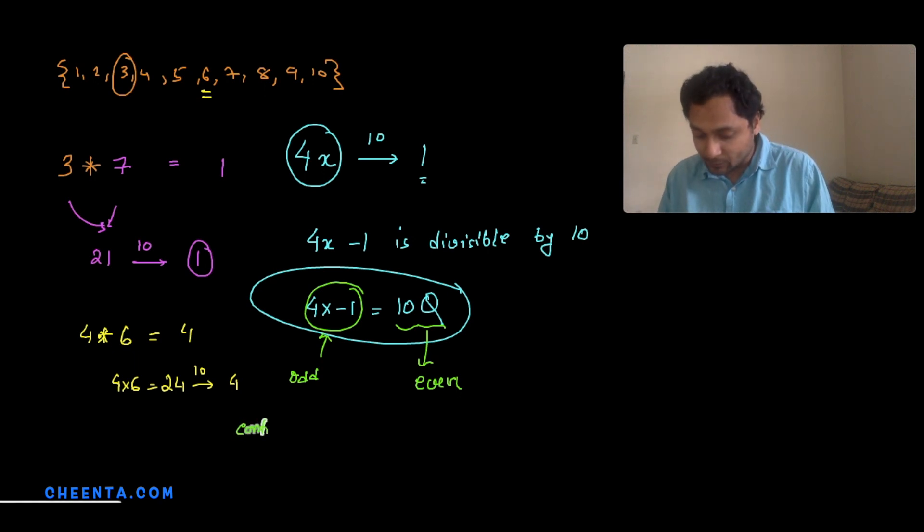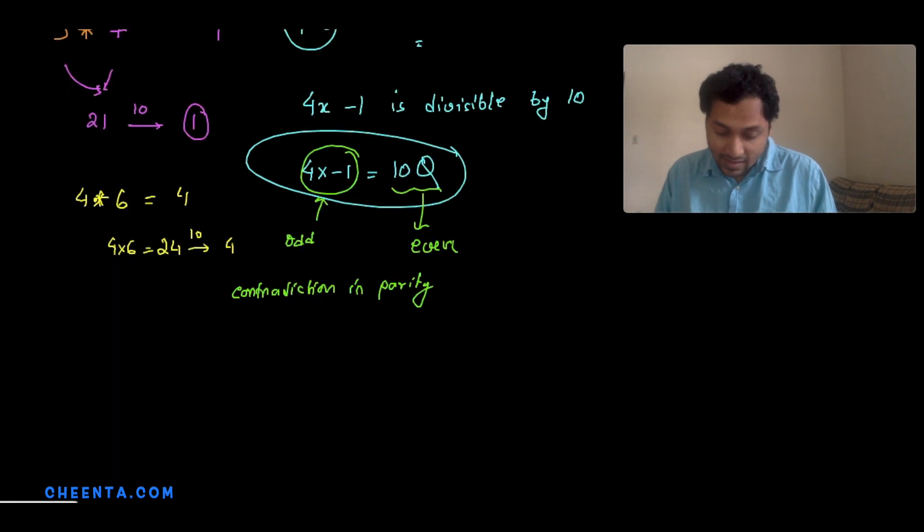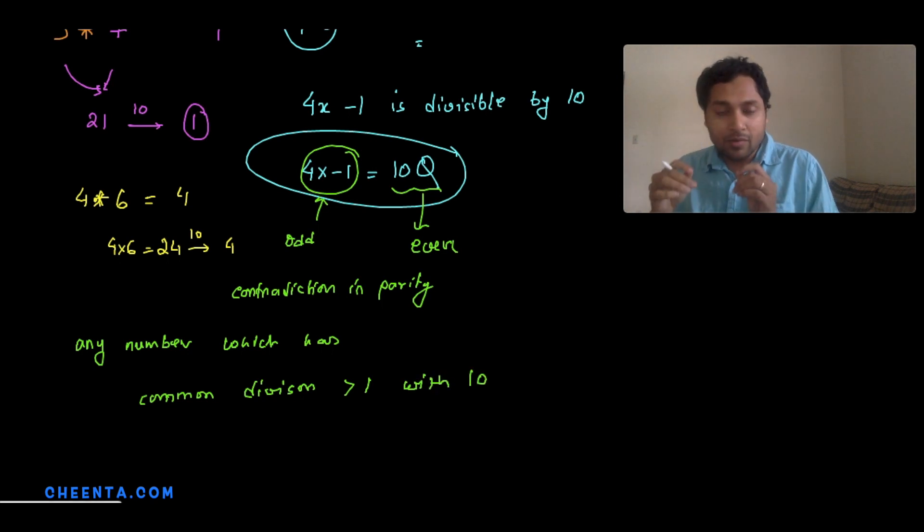So 4 will not have an inverse. In fact, we can easily guess what other numbers in the set will not have an inverse, and the answer is any number which has a common divisor greater than 1 with 10. Any number which has a common divisor greater than 1 with 10 will be reduced to this particular situation that we faced.